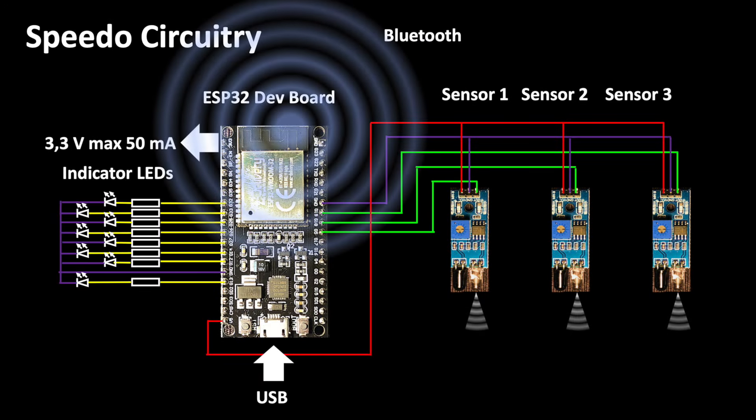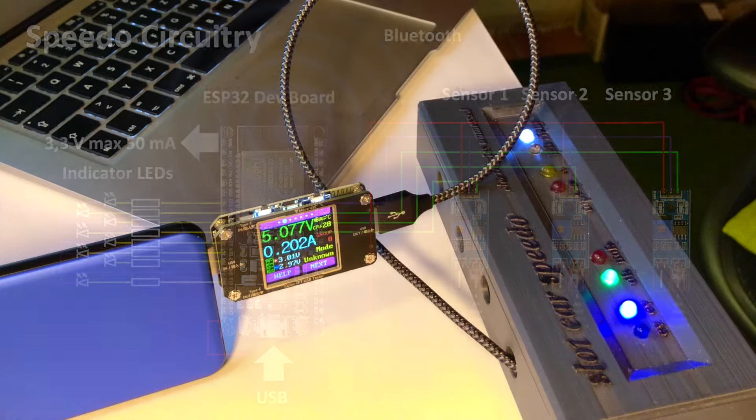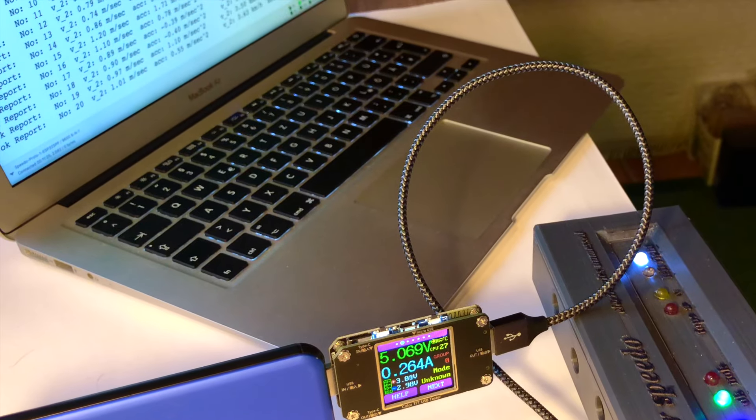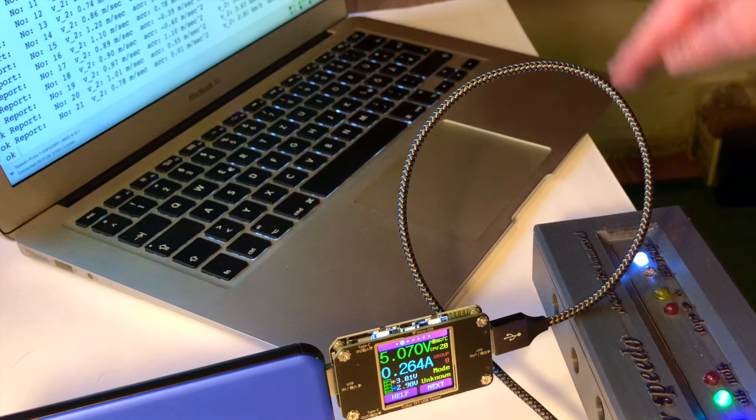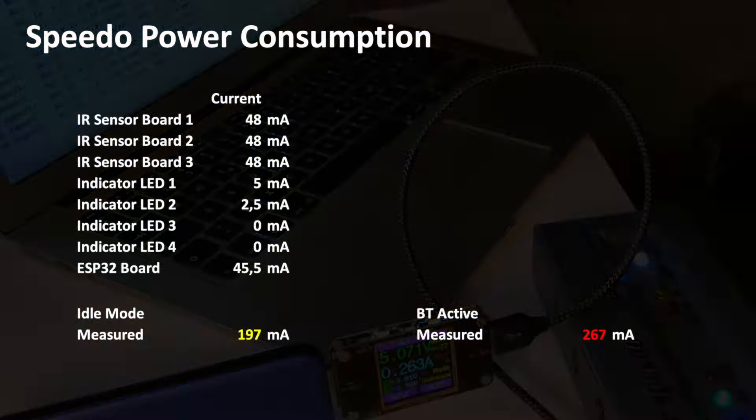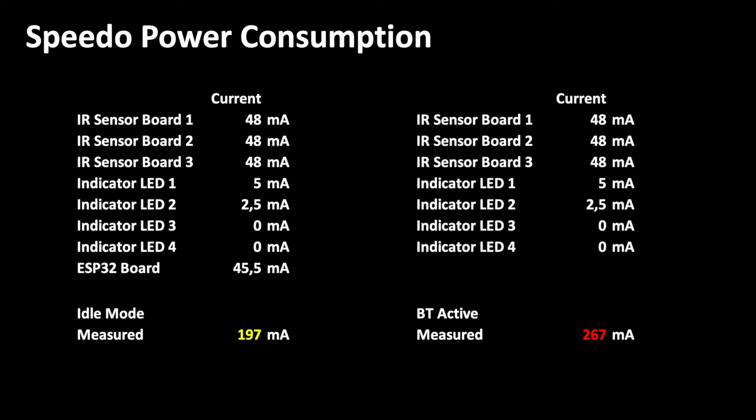In the next step, we connected the ESP32 board to a PC via Bluetooth and you can see the incoming data in the background. The current on the USB interface is increasing up to 267 mA while Bluetooth is sending data. In this state, the calculated current of our ESP32 processor is about 150.5 mA.